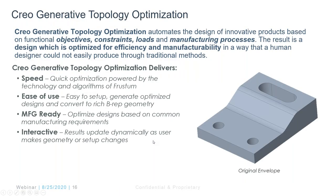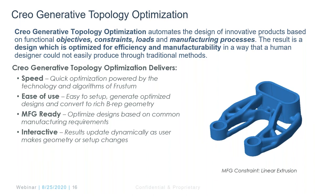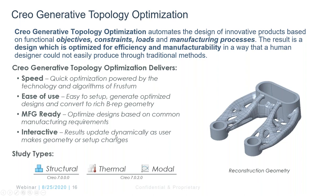The next topic is generative design. PTC acquired a company called Frustum, and that AI engine is what powers generative topology optimization (GTO). This is another add-on extension, introduced in Creo 7.0. The Frustum engine combines topology optimization and simulation algorithms to generate results optimized based on manufacturing criteria. It runs fully integrated in Creo Parametric. PTC used to have a different optimization approach in versions 5 and 6, but this is the latest in 7.0. It currently supports structural analysis.